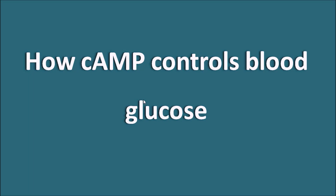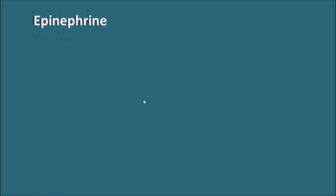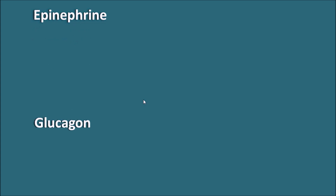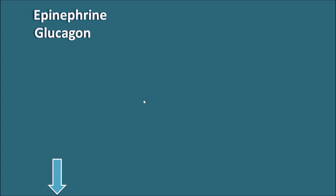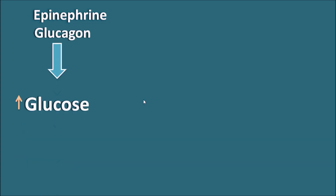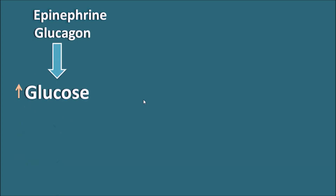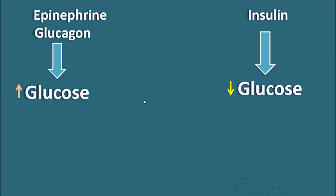How cyclic AMP controls blood glucose? Hormones like epinephrine and glucagon are going to increase the glucose levels. At the same time, another hormone like insulin is going to decrease the glucose levels.